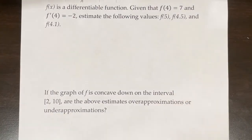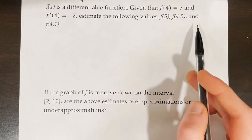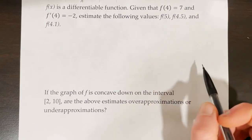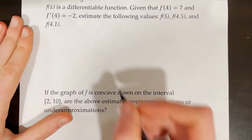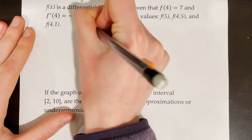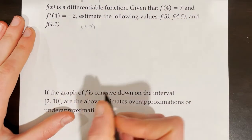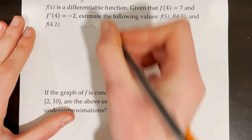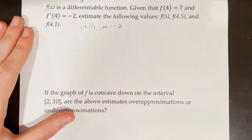f of x is a differentiable function. Given that f of 4 equals 7 and f prime of 4 is negative 2, estimate the following values. First we need to come up with our equation for L of x or T of x. We know that our point is going to be (4, 7), because we're coming up with our tangent line point, and we know that f prime of 4 is negative 2, so m is going to be equal to negative 2.